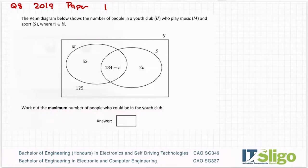When you're trying to figure out what's the min or max number that could be in a universal set, the youth club in this case, we're literally playing with the overlap here, the area in the middle and sometimes the outside area. The outside area is fixed in this case.